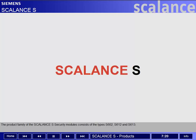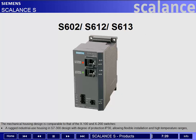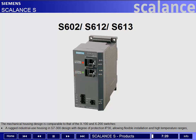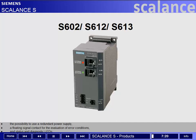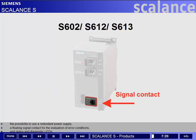The Scalance S Security Modules consist of the types S602, S612, and S613. The mechanical housing design is comparable to that of the X100 and X200 switches — a rugged industrial use housing in S7300 design with degree of protection IP30, allowing flexible installation and high temperature ranges. The possibility to use a redundant power supply, a floating signal contact for the evaluation of error conditions, and status and diagnostic LEDs.